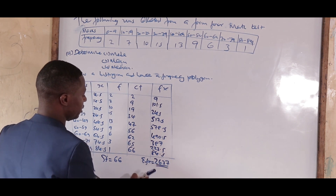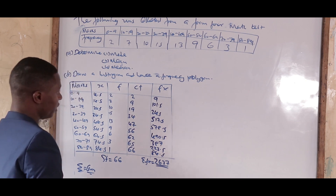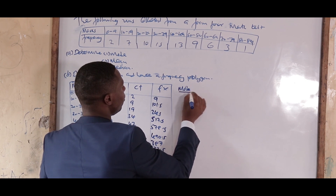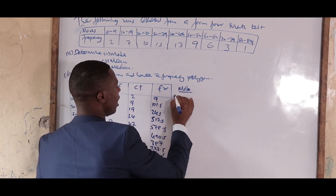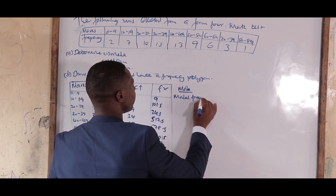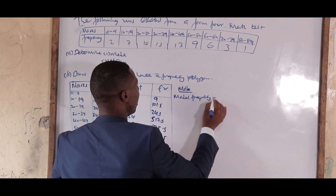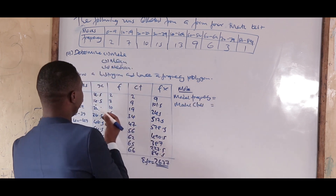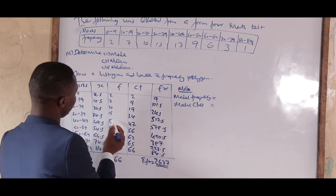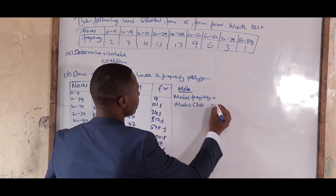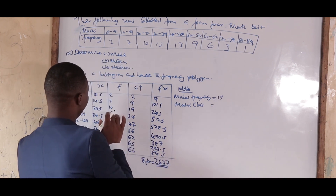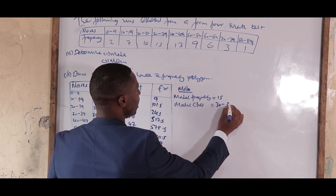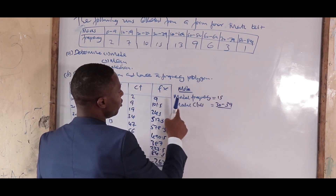Mode can be asked in two ways: modal frequency and modal class. The modal frequency is the highest frequency, which in this case is 15. The modal class is the class that has that highest frequency, which is 30–39.